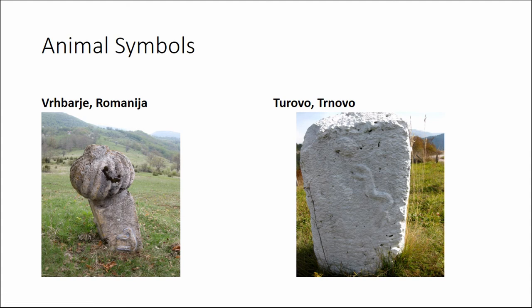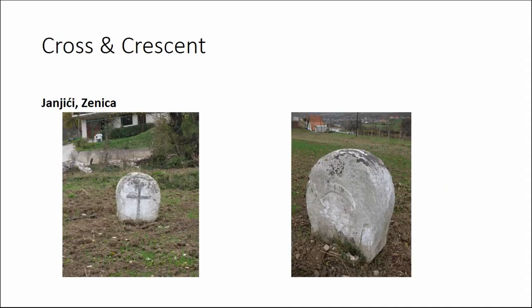A very interesting phenomenon is the joint usage of the cross and the crescent — even though the crescent of this period is not yet the official symbol of the Ottoman state, it is nonetheless a recognizable symbol of Islamic culture. The crescent had been used at Stećak cemeteries differently before, but now it is used in certain cases together with the cross. This is a tombstone which has the crescent on one side and a cross on the other.